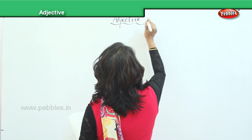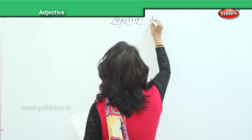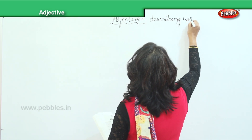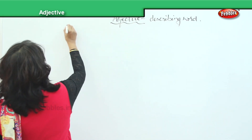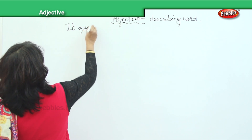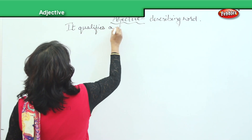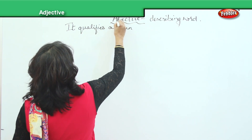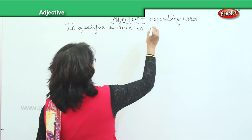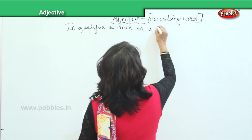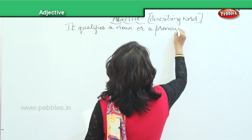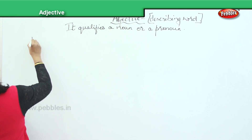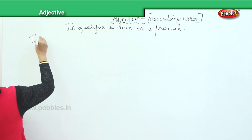An adjective is a describing word. It qualifies a noun or a pronoun. There are two kinds of adjectives. The first one is the descriptive adjective.